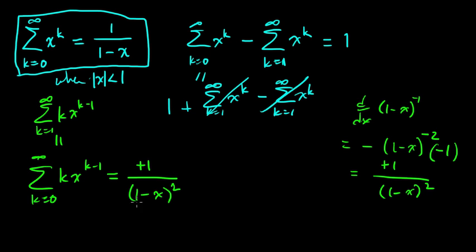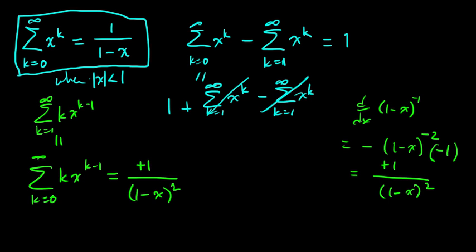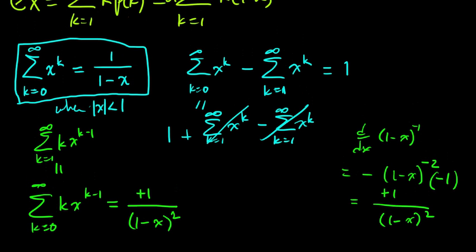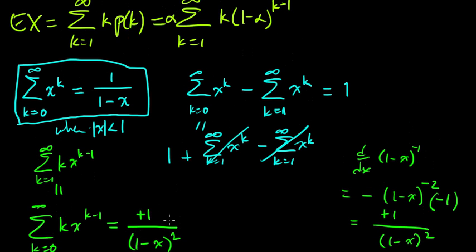That looks much better. And that gives us a formula. So we have that formula for the sum, for that kind of sum. It's 1 over 1 minus x squared. And so we can see it here. So we have this sum from 1 to infinity. We have this from 1 to infinity. So we just need to take x equal to 1 minus alpha.